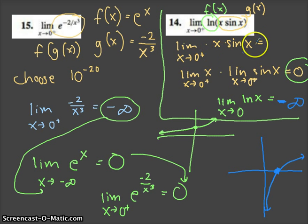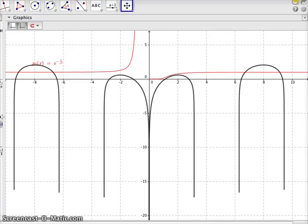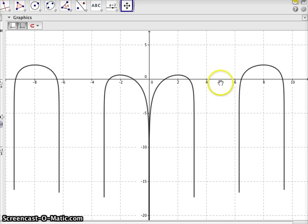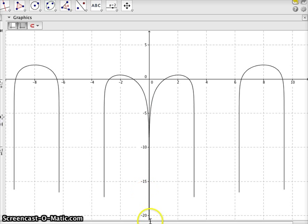Notice the process here: I find the limit of g(x), then use that limit to find the limit of f(x). Looking at the graph of the natural log of x times sine of x, as we approach 0 from the right, the graph goes down, down, down to negative infinity.